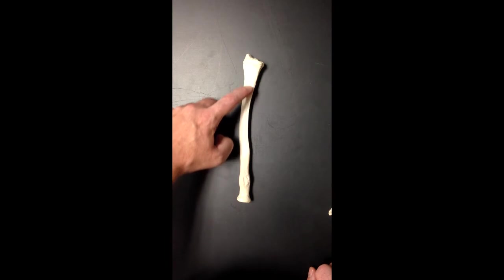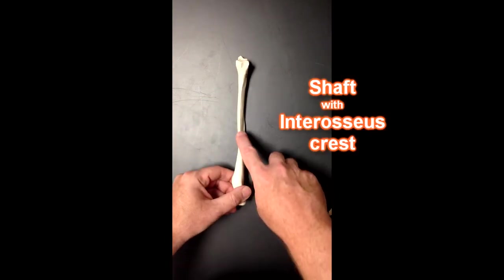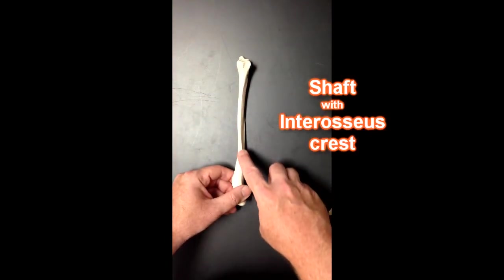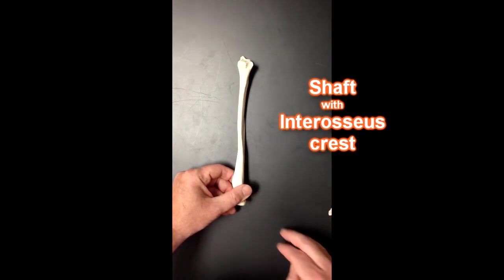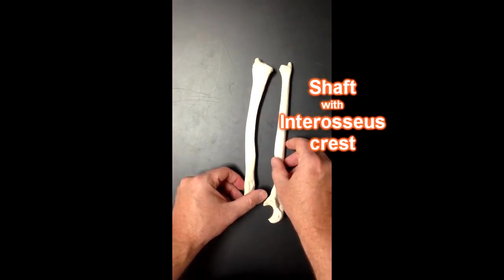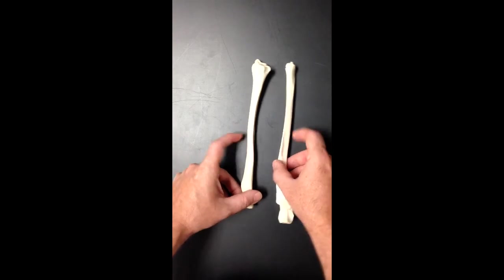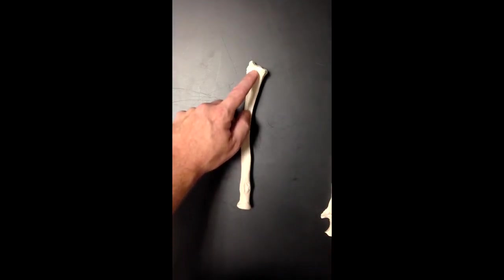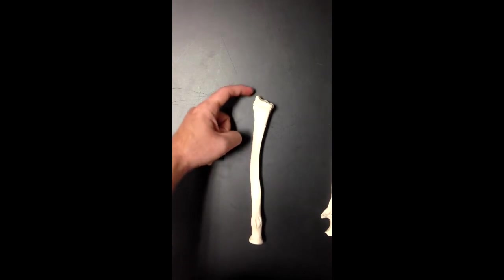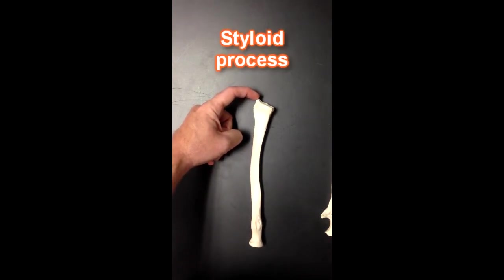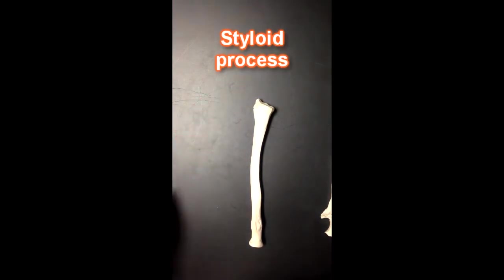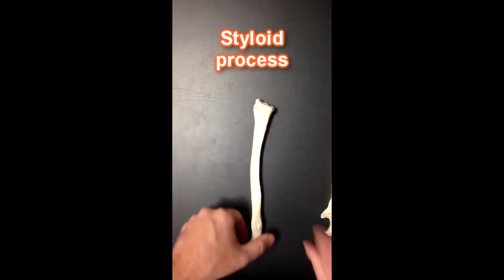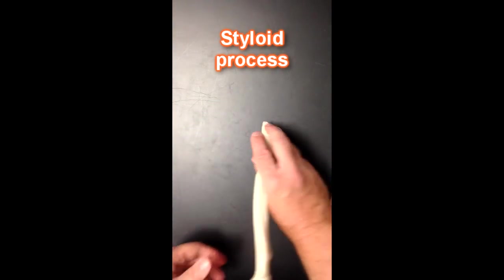We've got the shaft of the radius down here with this nice sharpened ridge which is going to be an attachment site for the interosseous membrane that would connect these two bones together. Going down to the distal aspect we can see this pointy part right here. That pointy part early anatomists thought looked like a stylus or styloid process. They call it the styloid process because it looked like a stylus, something to write with.